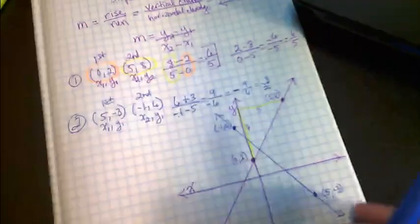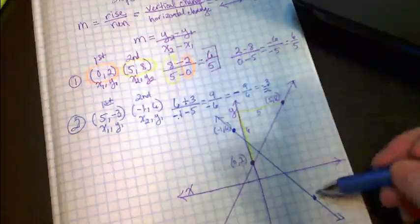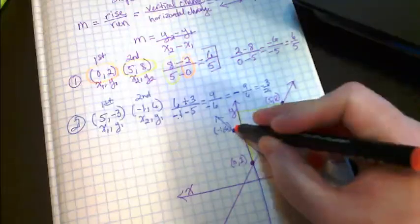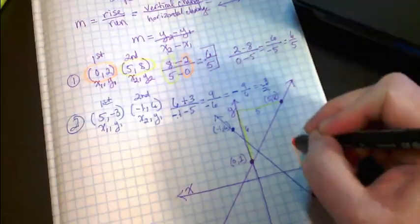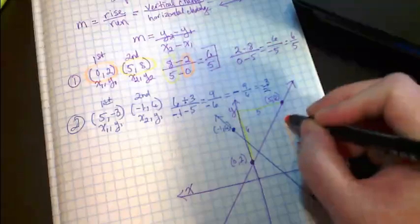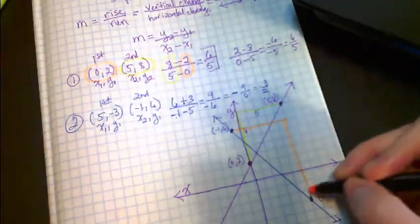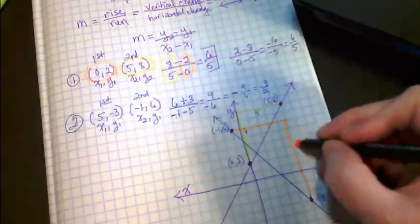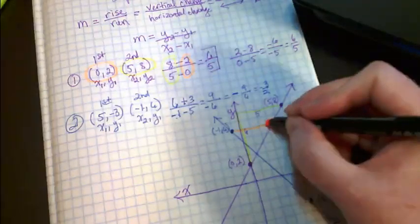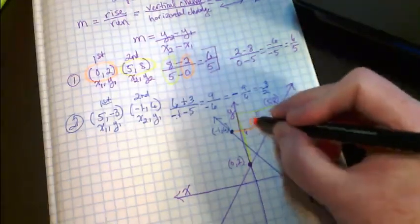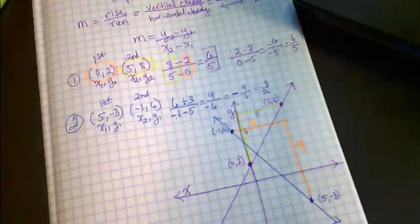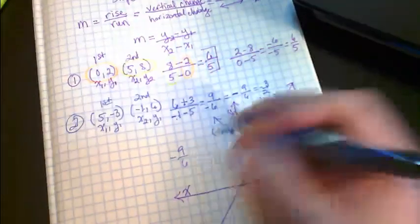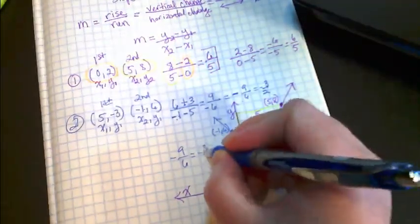And I'm going to show you again why it can be a challenge to count. We're going to go up to this point here. So up for a rise, over for a run, 1, 2, 3, 4, 5, 6, 7, 8, 9. And the run is 6. So we're showing in this case that the slope is negative 9 over 6, which also still has to be reduced to negative 3 over 2.